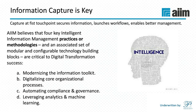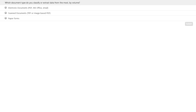Modernizing the information toolkit, digitalizing processes, automating compliance, and leveraging analytics and machine learning brings much more intelligence to the way we do things. So right now, I'm going to take a quick poll: which document type do you classify or extract data from the most by volume? Is it electronic documents — PDF, Microsoft Office, or emails? Is it scanned documents — TIFF or image-based PDFs? Or are you using paper forms? Please hit the submit button and we'll look at the results.